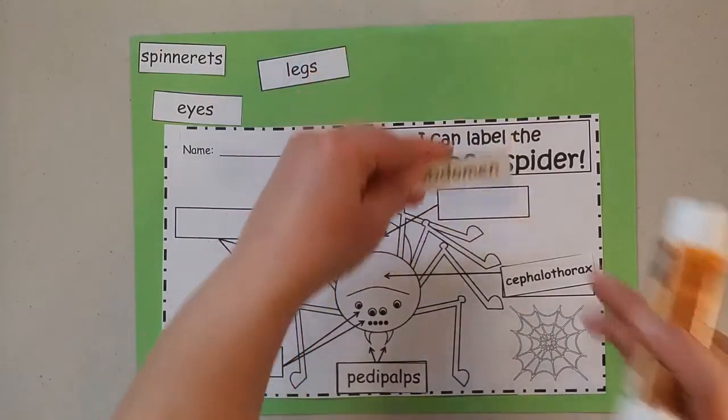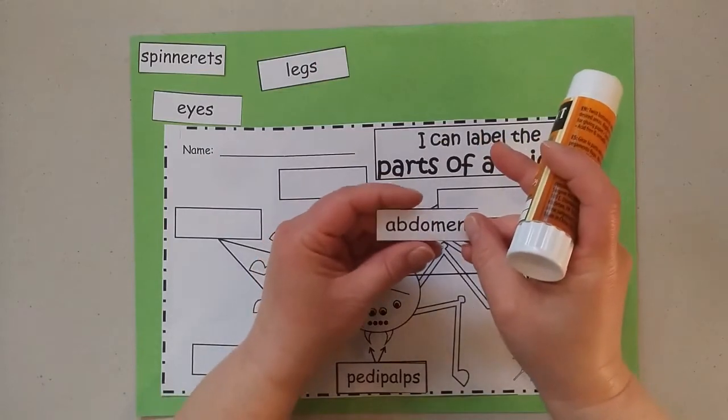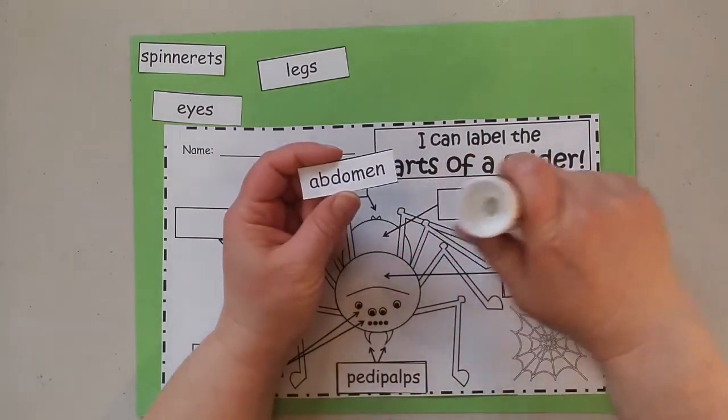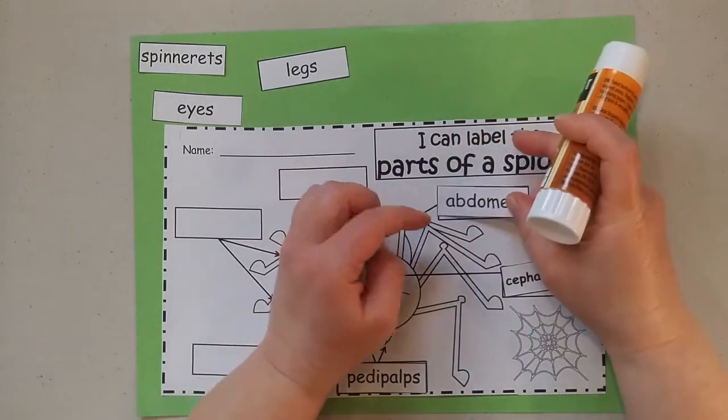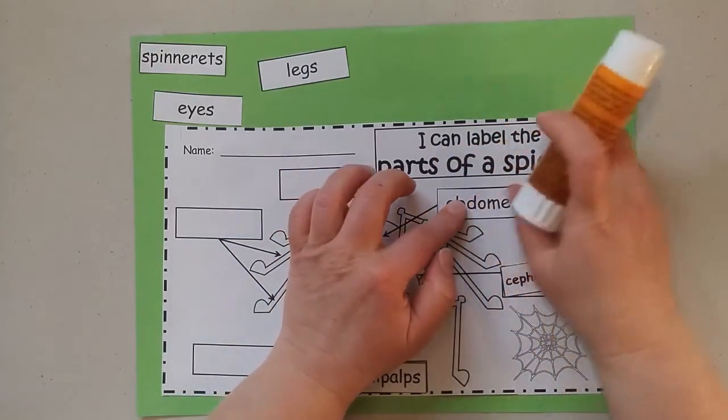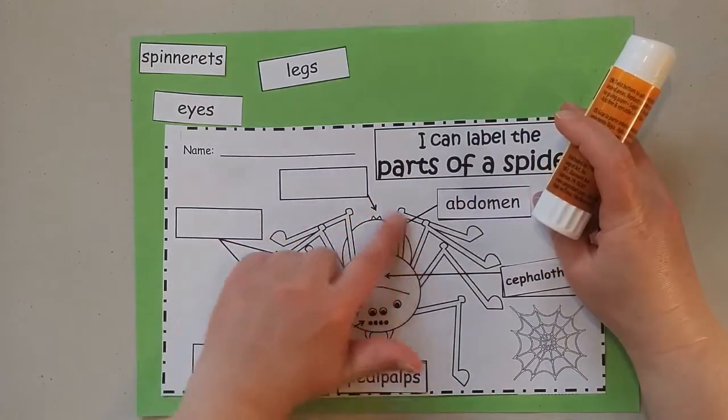This one is the abdomen. That's what that word says. So find your paper that looks like that, put your glue down, and stick it down. This back section is the abdomen.